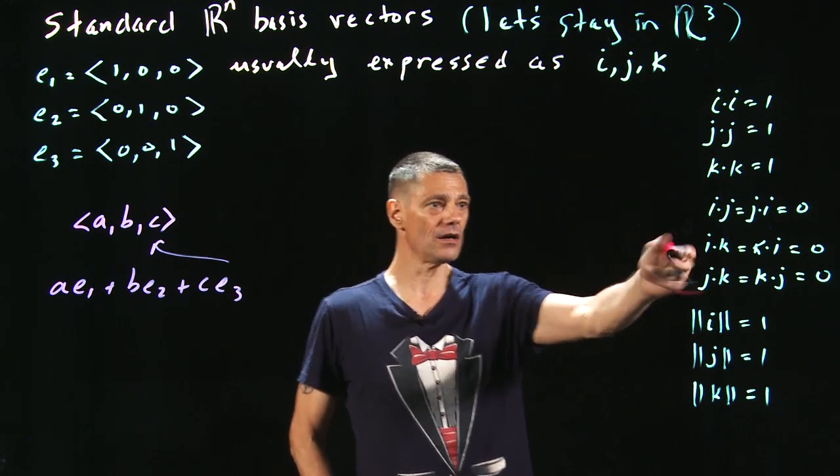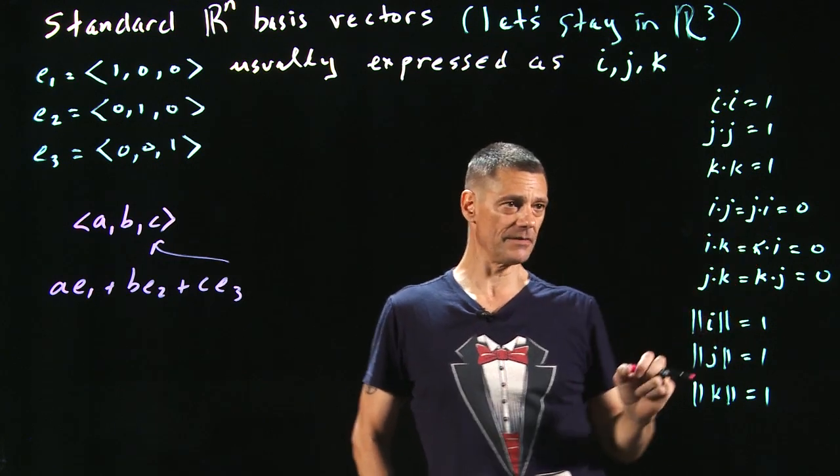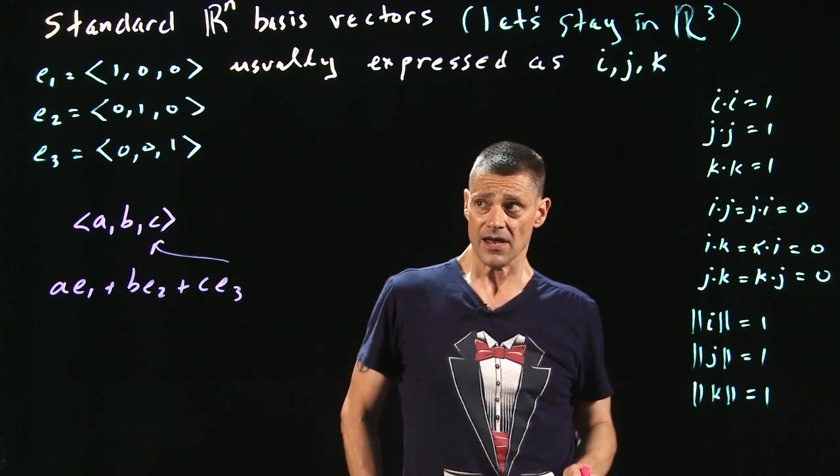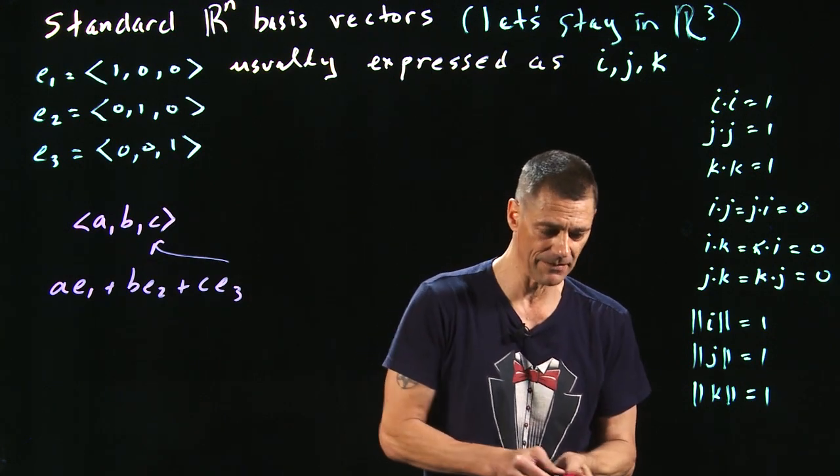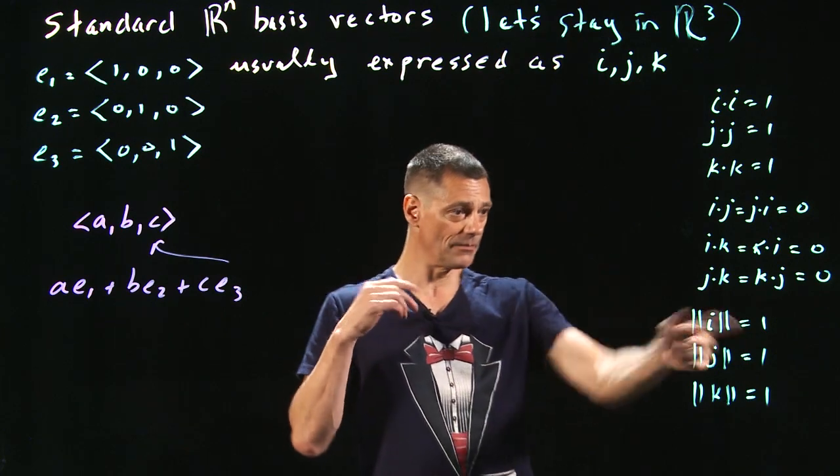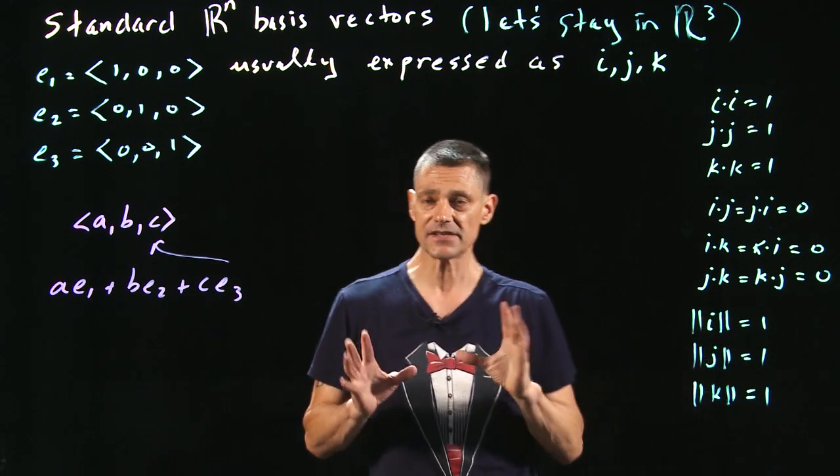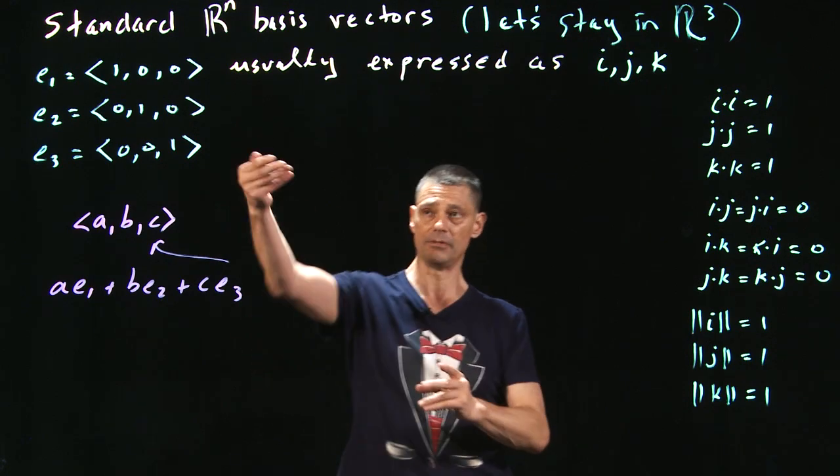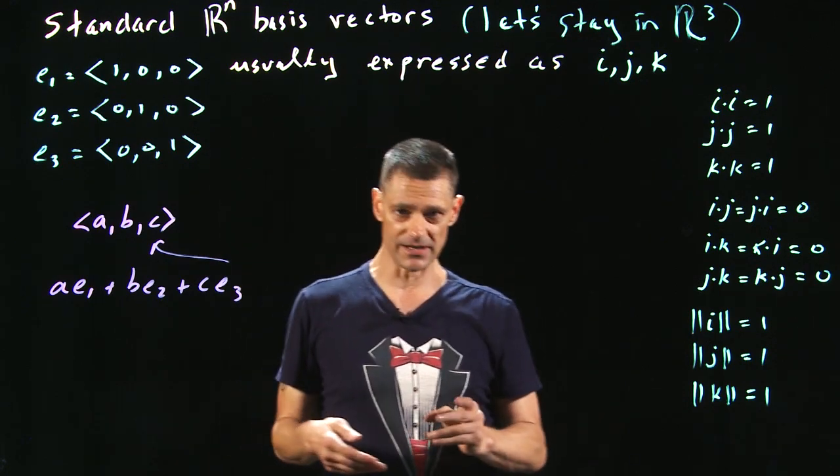And they're also orthogonal to each other, because i·j = j·i = 0 as the rest of them. And so here's a fabulous thing about these. They're orthogonal, they're orthonormal. The norm of this is just one. These have a lot of really nice properties. And by and large, we set up our original problems in these orthonormal bases.